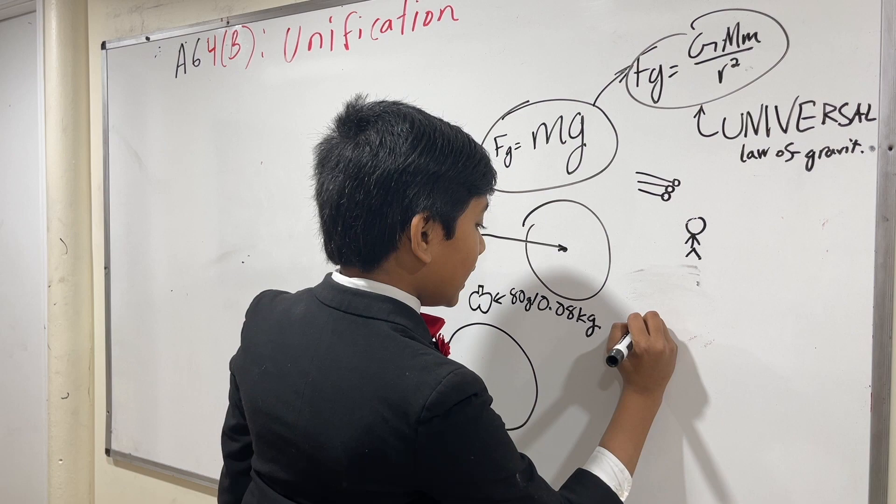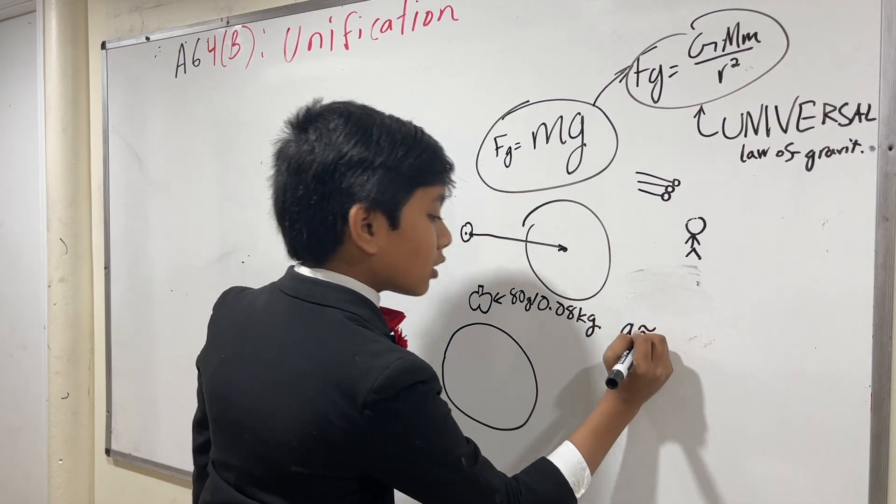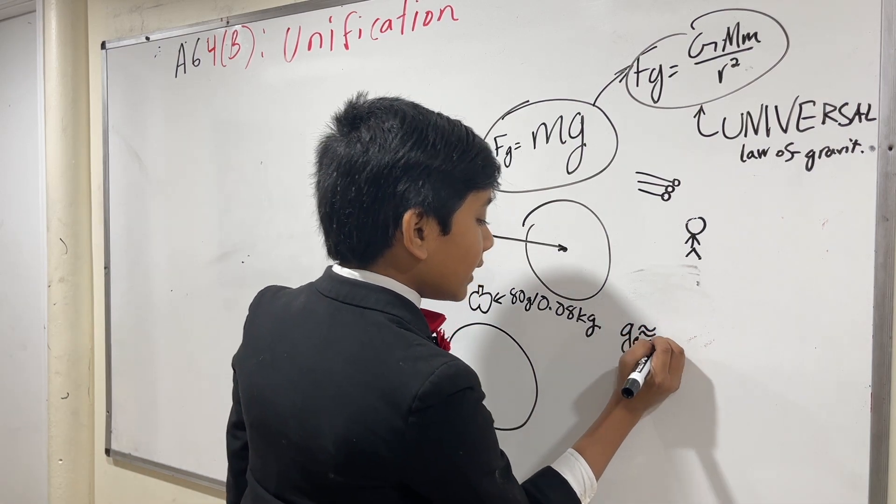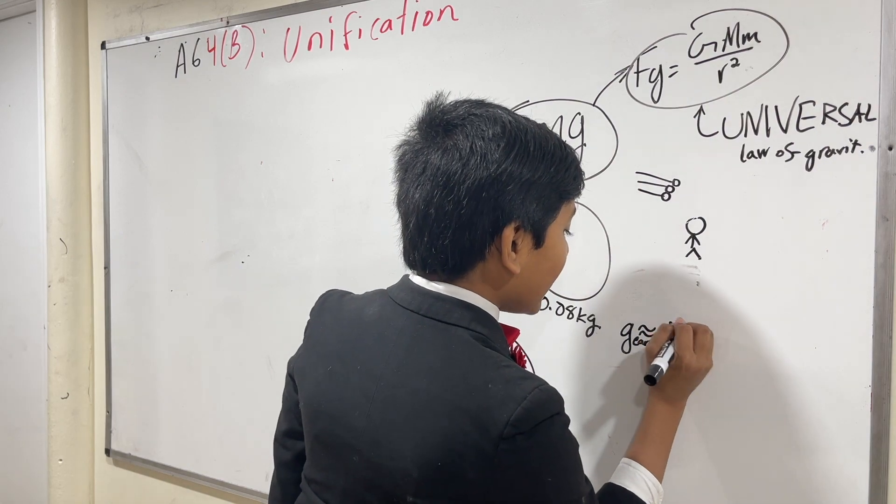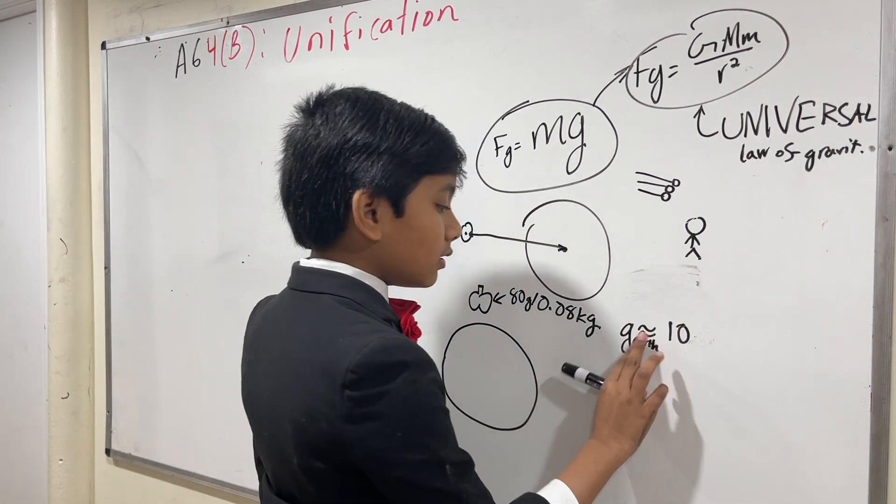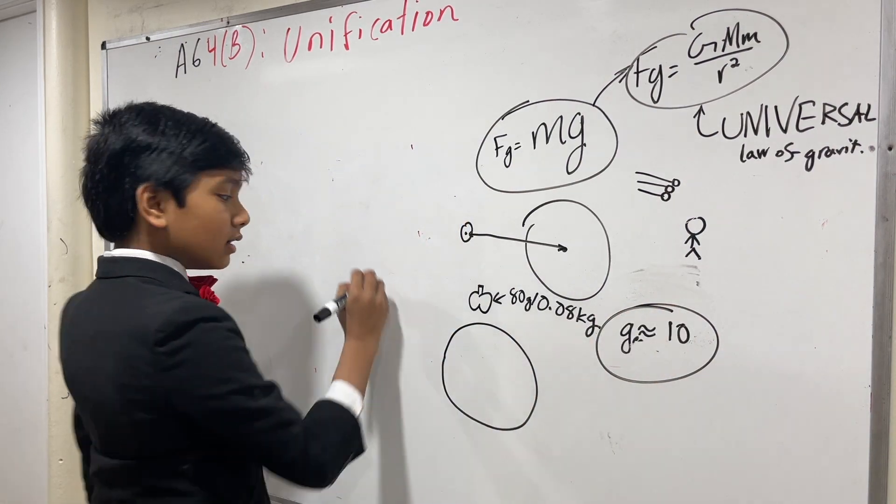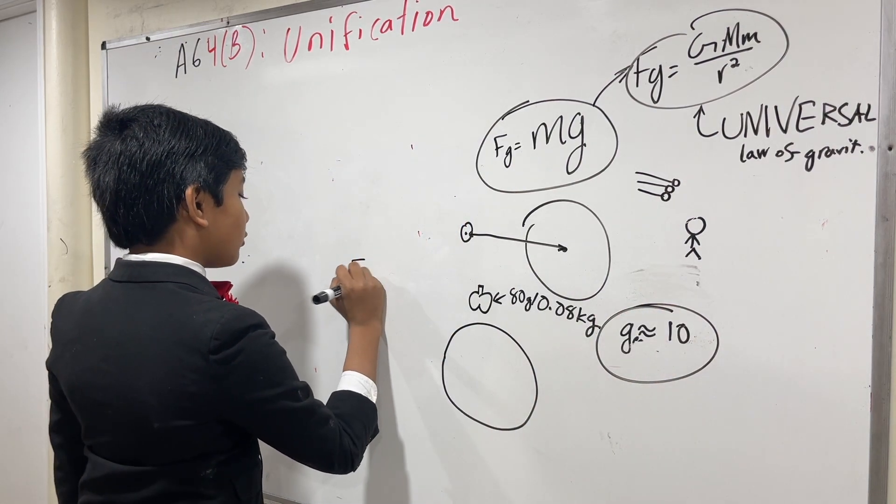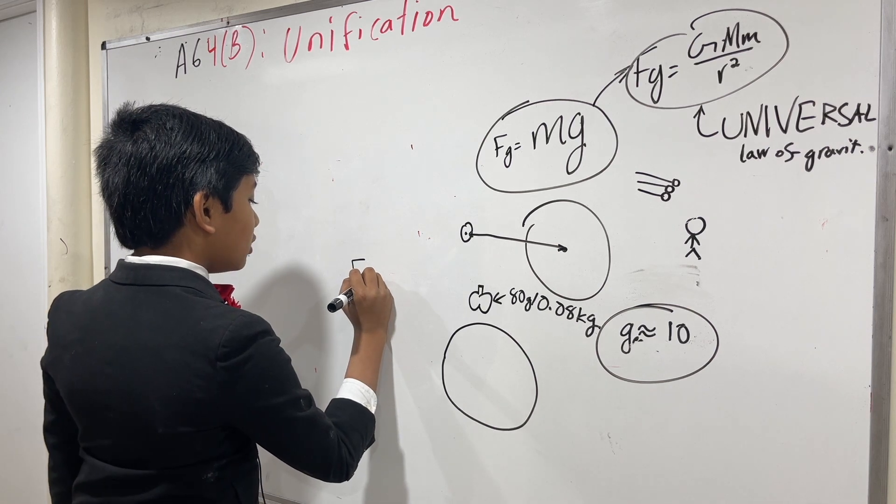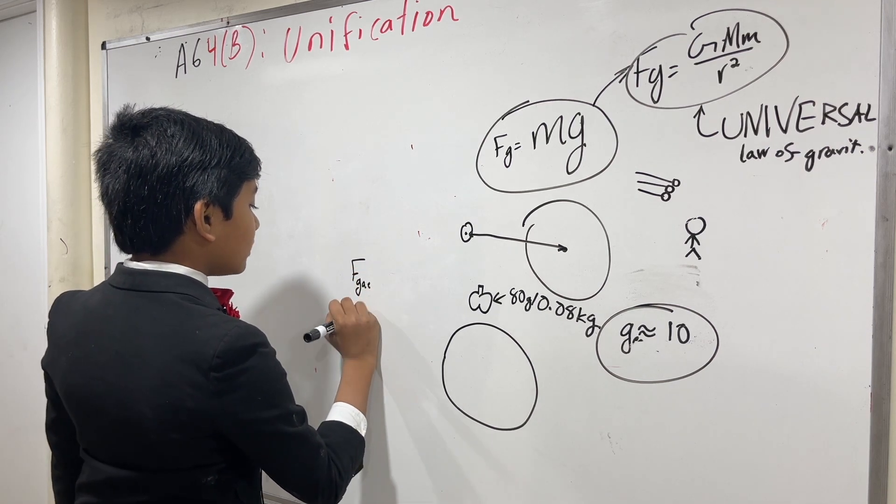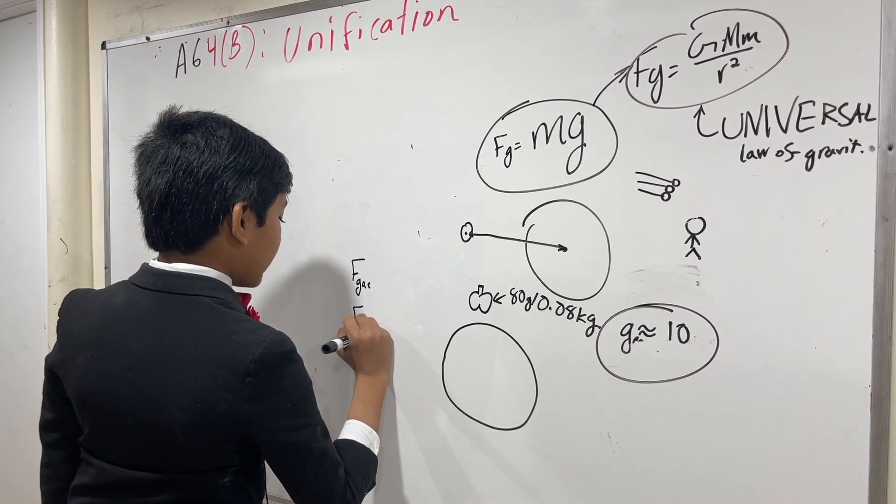So now, assuming that g, or the gravitational constant on Earth, is about 10, let's just say it's 10, not 9.8. Then, what is the force of gravity exerted by the apple on Earth, and the force of gravity exerted by Earth on the apple?